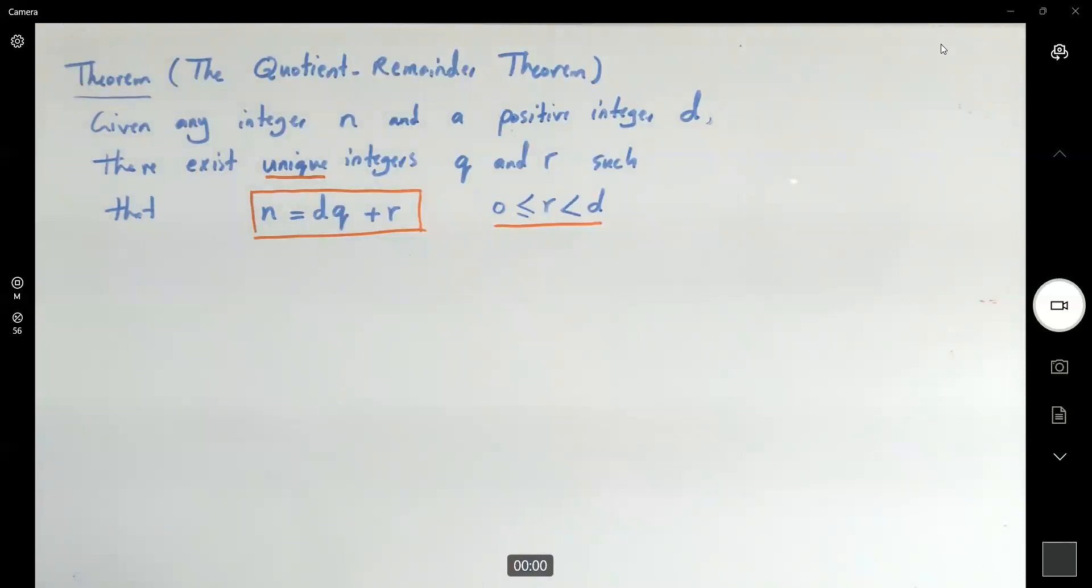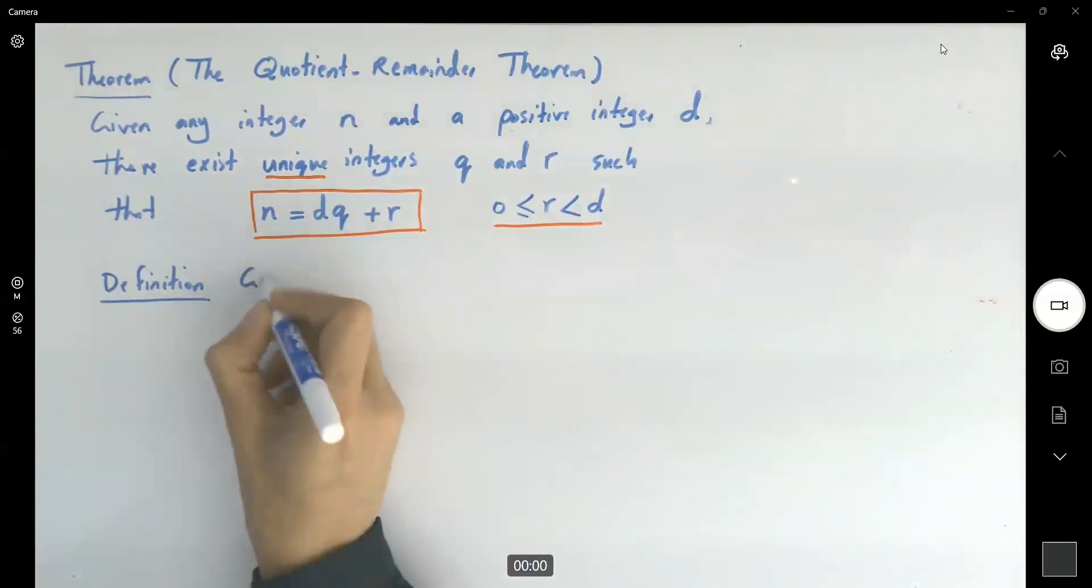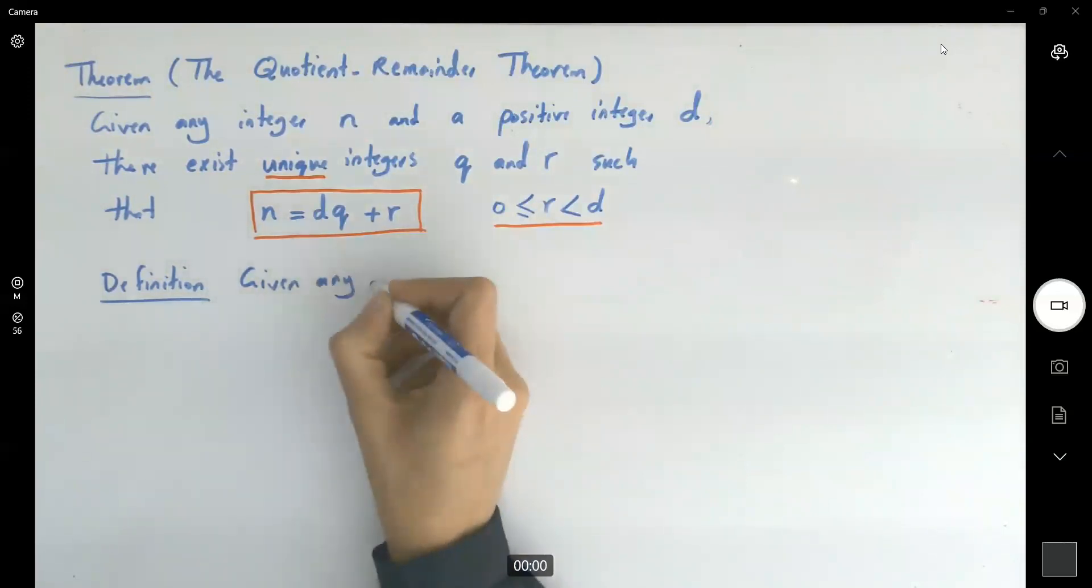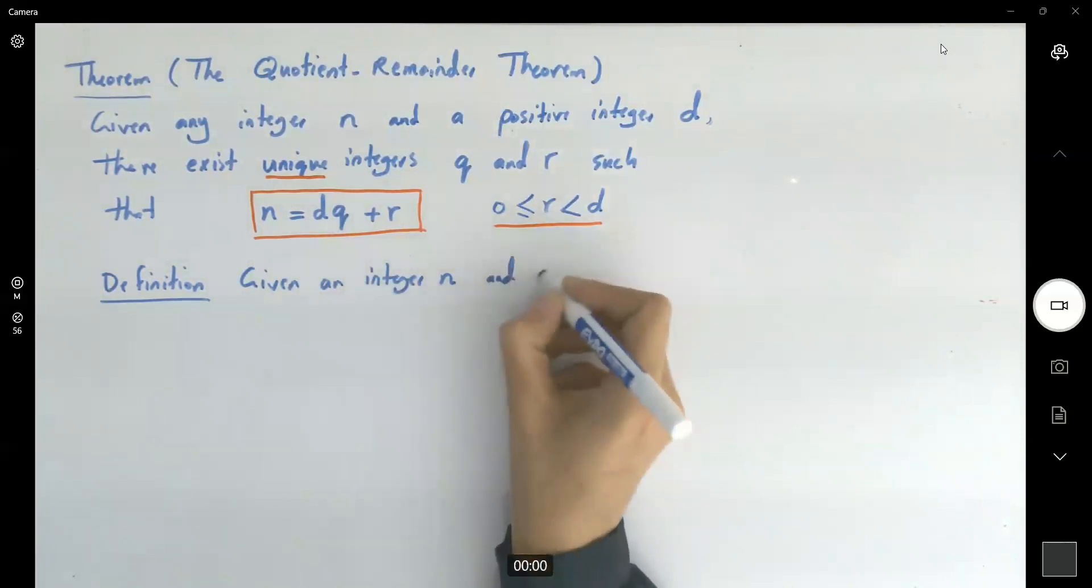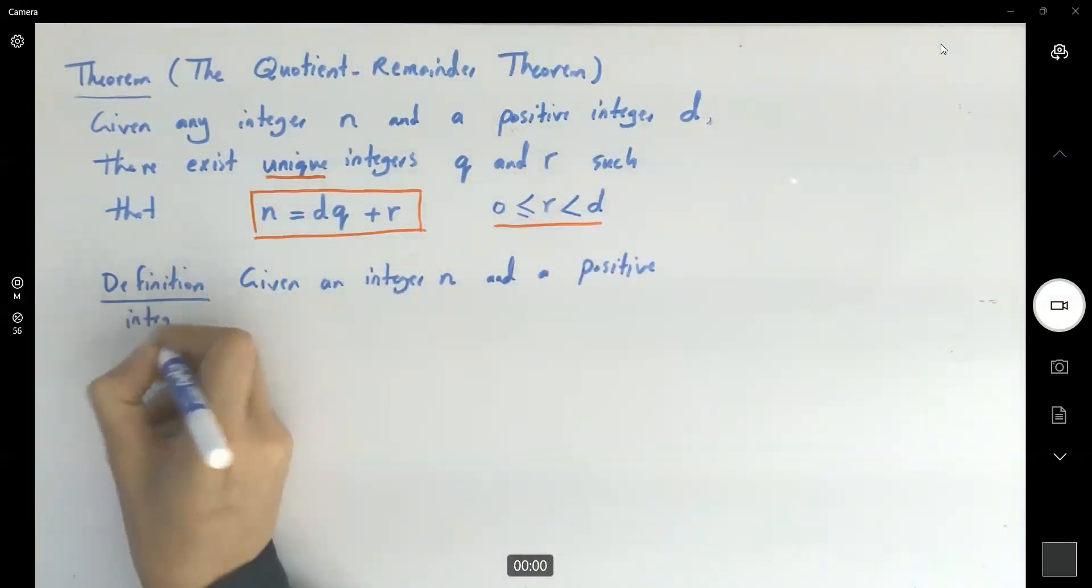Definition. Let's go over another definition, then some examples. Given any integer like n and a positive integer d.